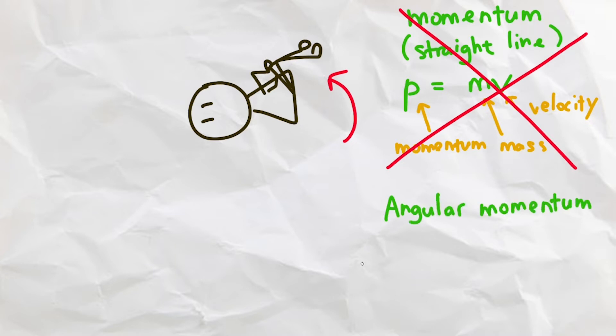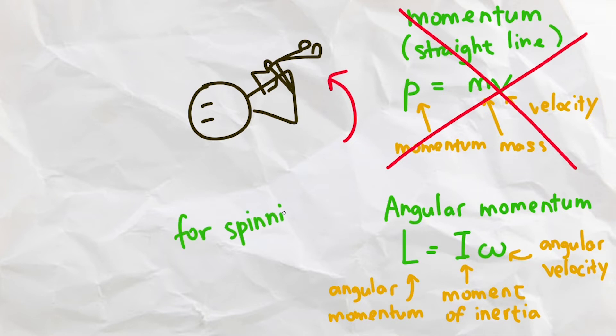However, in the case of a backflip, we need to use the angular momentum formula, which is L equals Iω, where I is the moment of inertia and ω is the angular velocity. We are using this because we will be traveling at an angle during our flip instead of going completely straight.